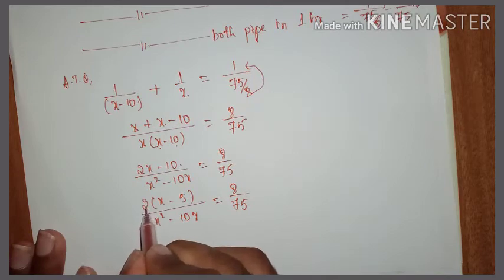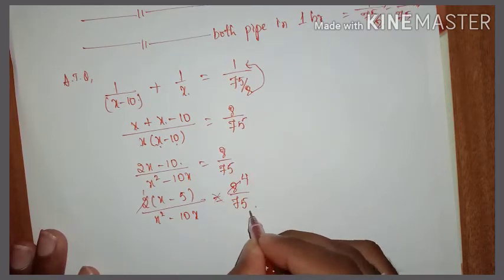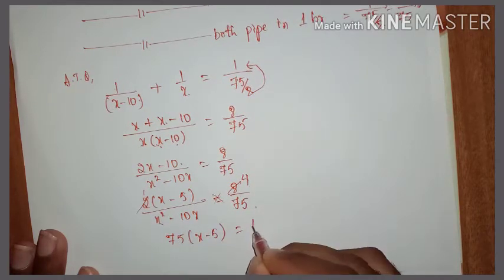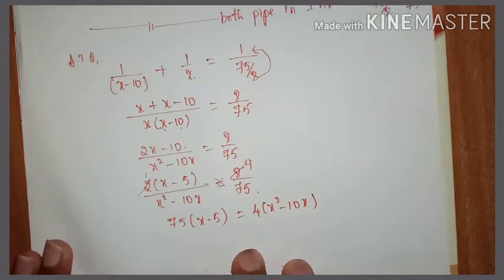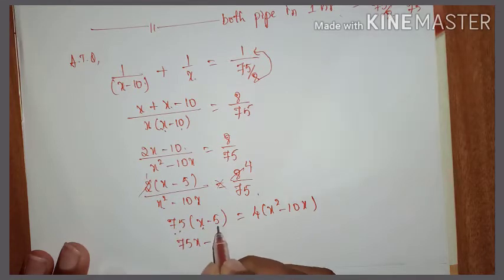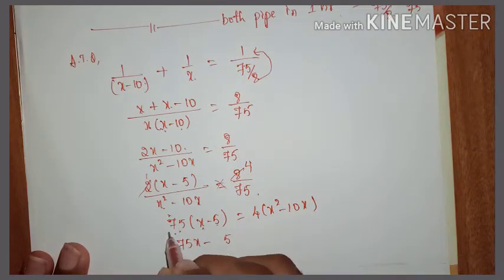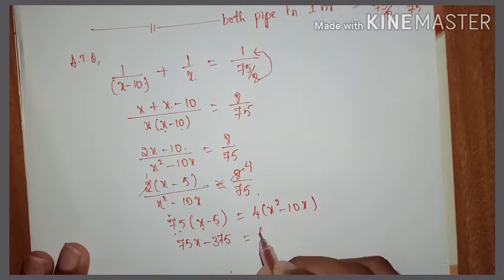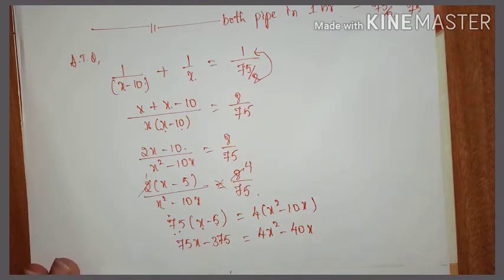The 2 in the numerator cancels with the 8 in the denominator — 8 divided by 2 gives 4. Then doing cross multiplication: 75 into (x - 5) equals 4 into (x squared minus 10x). Expanding the left side: 75x minus 375 equals 4x squared minus 40x.